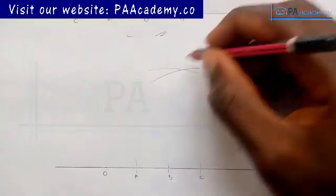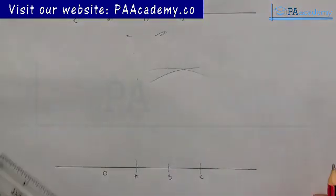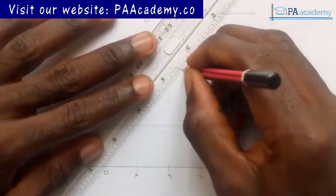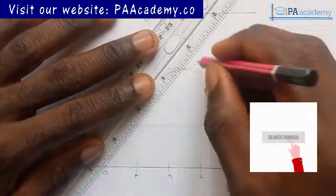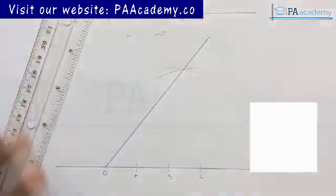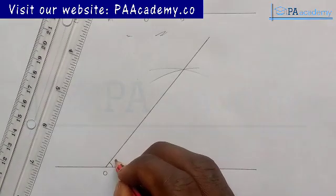Now from the point of intersection which is right here, you have to make sure that you are picking the right points, you are going to draw a line to point O. In doing that, this angle that we just have here gives us angle 50 degrees.